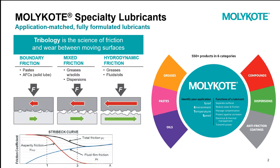To choose the correct Molycote product for any given application, you can refer to the Molycote wheel on the right-hand side of the screen. We define an application by load, environment, temperature, and speed, and then choose a product according to the resulting friction regime.